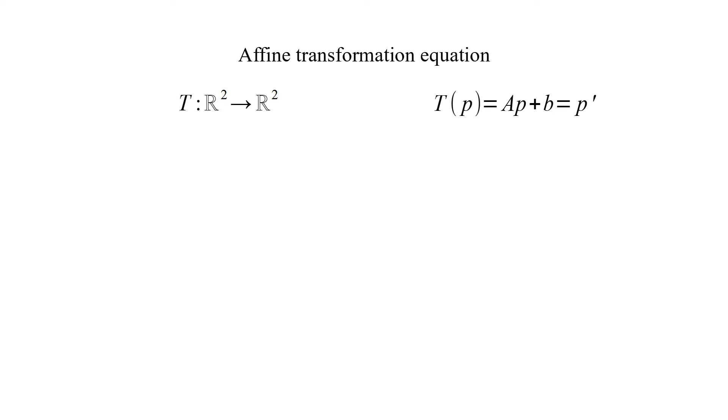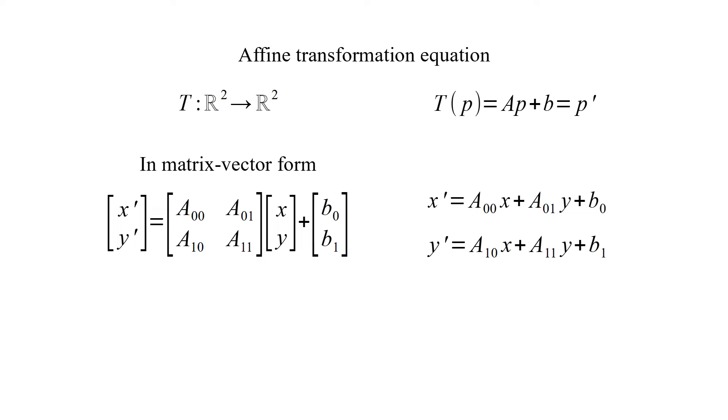Affine transformation T of P is equal to A times P plus B, and it is equal to P prime. This is affine transformation equation in matrix vector form. And these are the equations for X prime and Y prime.